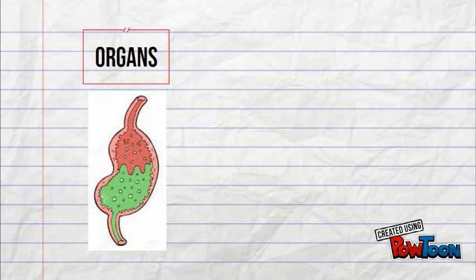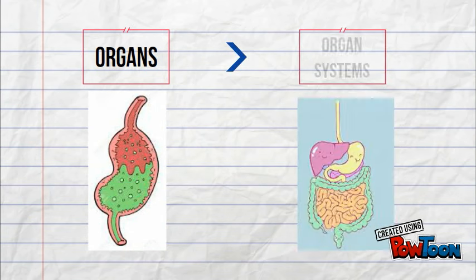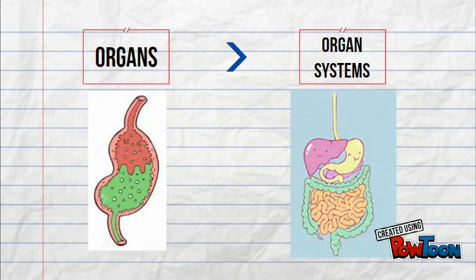Finally, your organs all work together to form organ systems. Organ systems are when two or more organs come together to perform a function in your body, like your digestive system.